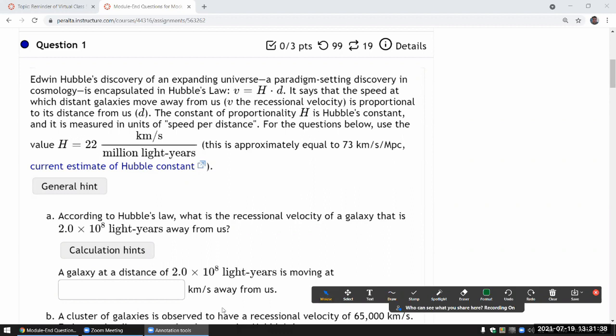So Hubble's law refers to the discovery that, well, it's explained as us living in an expanding universe. That's the module 6 description. In module 5, we just left it at it appears to be that the recessional velocity of distant galaxies is proportional to their distance from us.